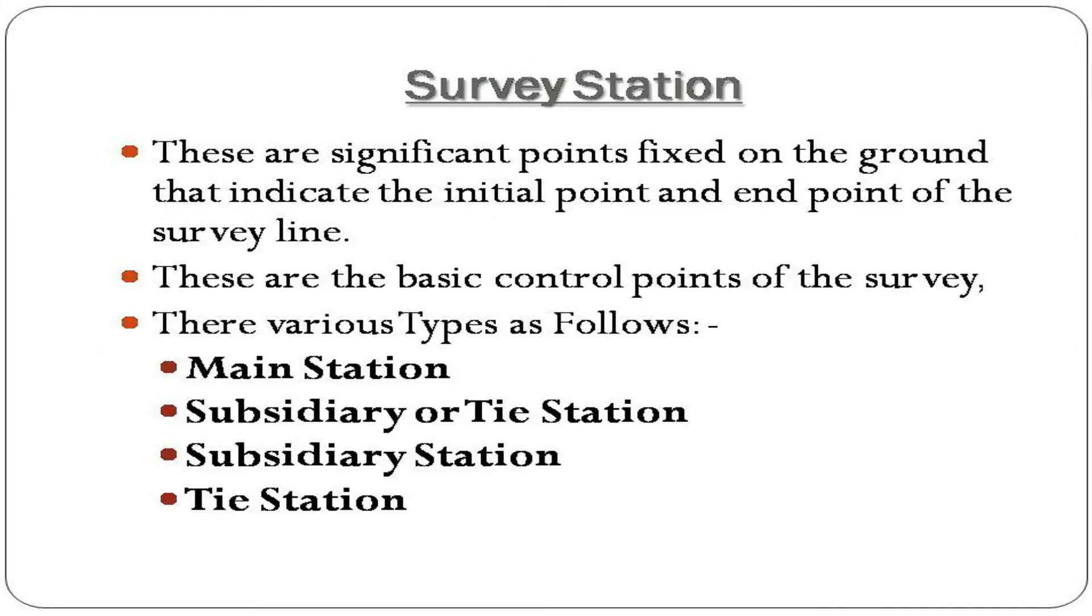Survey stations are significant points fixed on the ground that indicate the initial point and end point of the survey line. These are the basic control points of the survey. There are various types as follows.